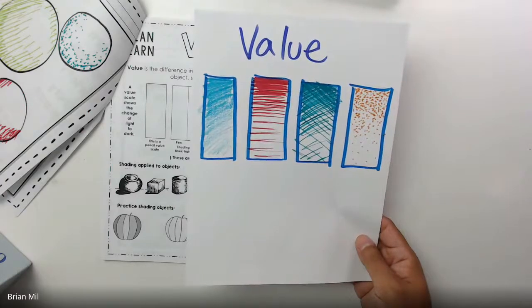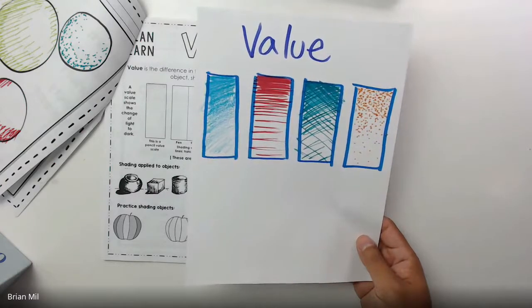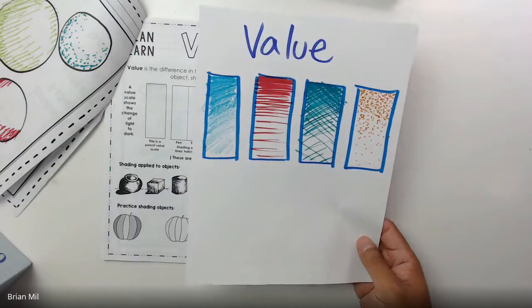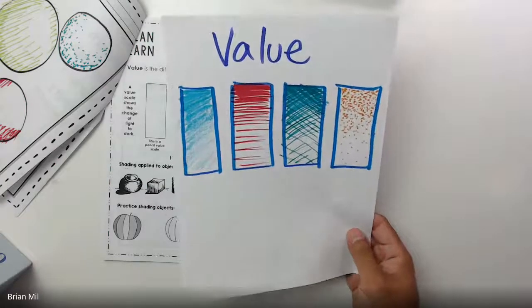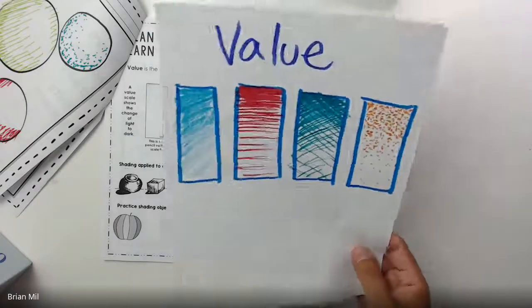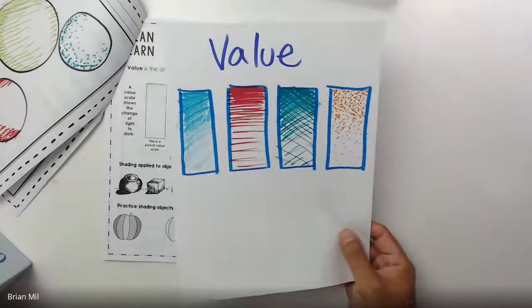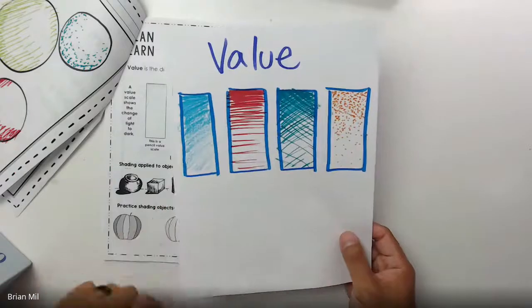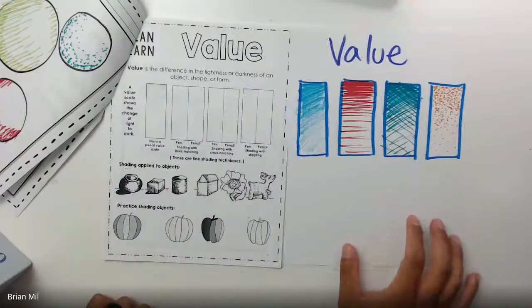So if you don't have this workbook, what I want you guys to do is write down the word value on your blank sheet of paper. And I want you guys to draw four rectangular boxes so you guys can participate still.